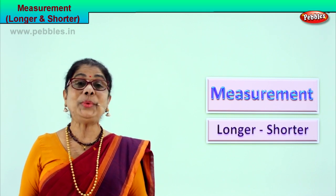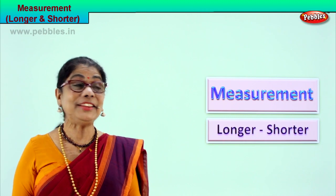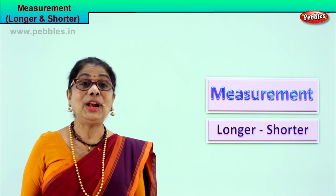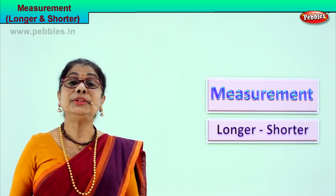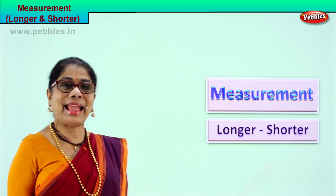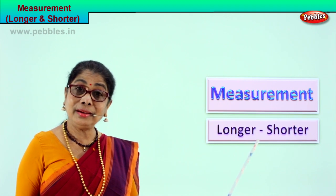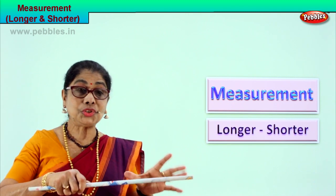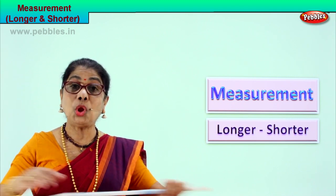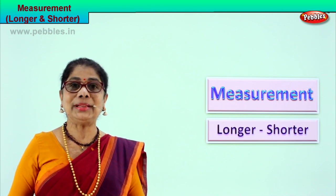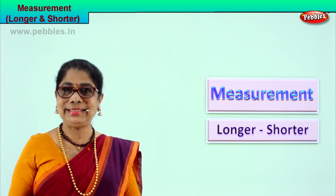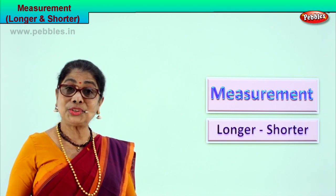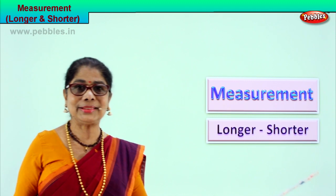Hi children, today we are learning something different and interesting: measurement. We are going to compare two different measurements, and so we are learning today longer and shorter. If you say longer rod, shorter rod — rods can be long or short, rulers can be longer or shorter. So we are going to compare the two sizes: short and long. This is shorter, this is longer. Measurement.